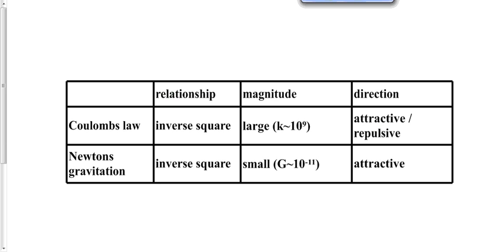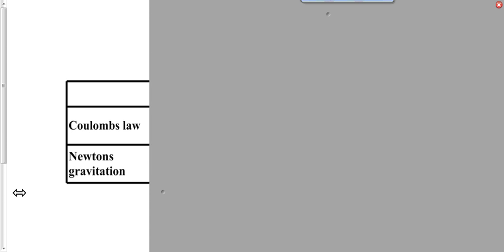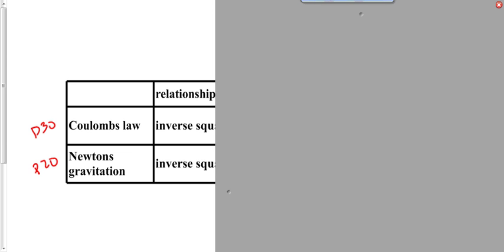One final summary here. Just to compare those two laws that we learned about last year in Physics 20 and just today in Physics 30. Coulomb's law and Newton's law of universal gravitation. The relationship is, are both what we call inverse square relationships. That comes down to the equation, right? F is equal to KQ1Q2 over R squared. The force is inversely related to the square of the distance in both cases.